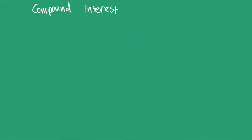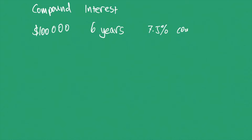Welcome back. In this video I'm going to talk about compound interest. When we are doing compound interest, the interest is compounded annually. This means that at the end of each year, the interest earned is added to the principal invested or borrowed, and that increased amount then becomes the amount on which the interest is earned in the following year. Let's say I invested $100,000 in a bank for six years and the bank pays me an interest rate of 7.5% compounded annually.